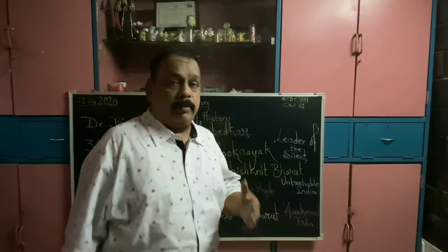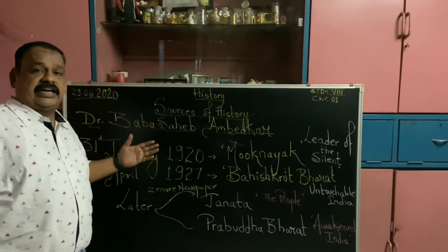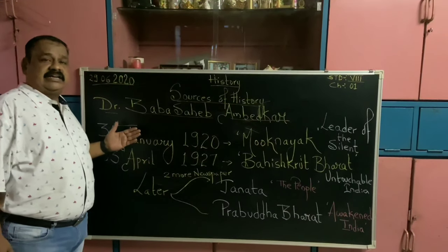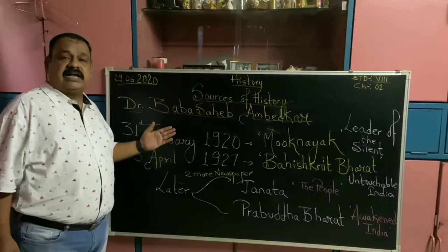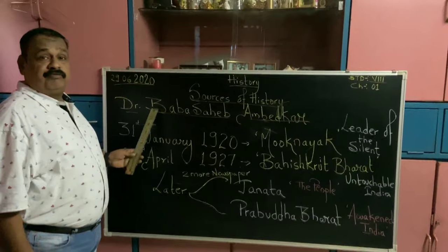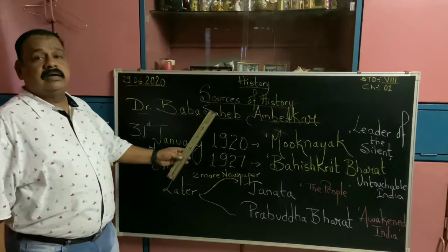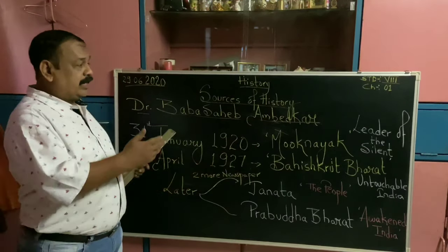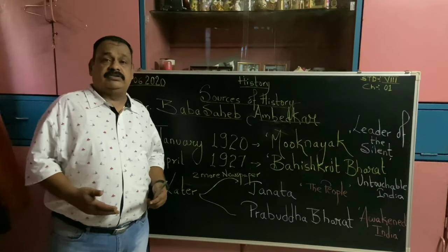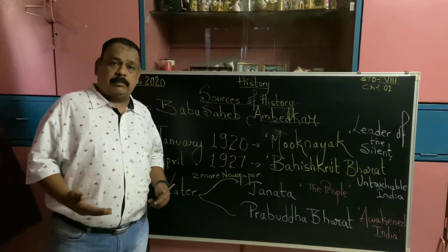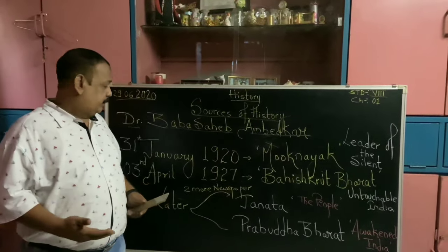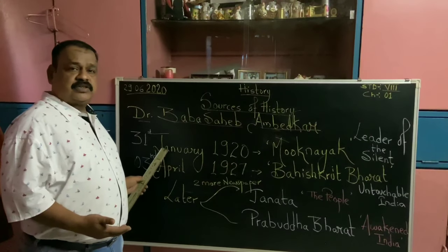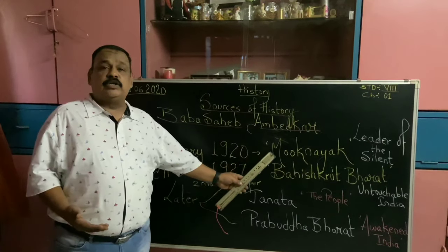One such great social reformer I would like you to pay attention to — he is also known as the architect of India. You need to understand about this great personality: Dr. Bhimrao Ramji Ambedkar, also popularly known as Dr. Babasaheb Ambedkar. In order to understand his greatest contribution in the field of journalism — he was not just a lawyer but a very good journalist, an editor and publisher of many newspapers. On the 31st of January 1920, he started a newspaper called Muknayak.